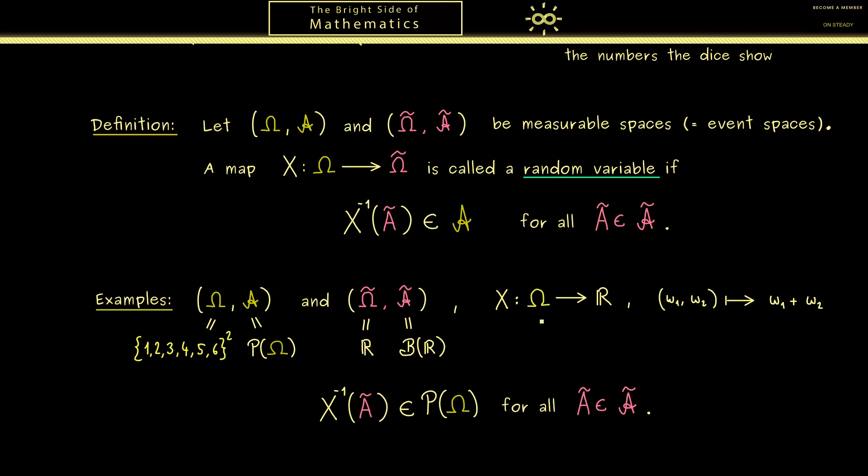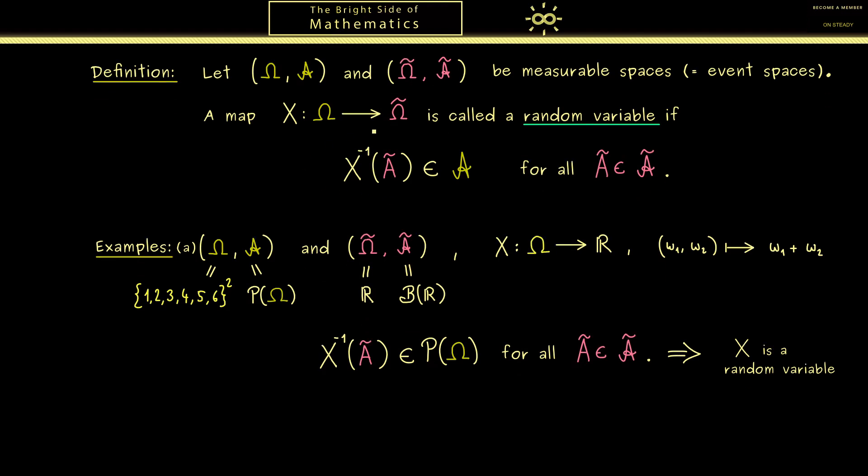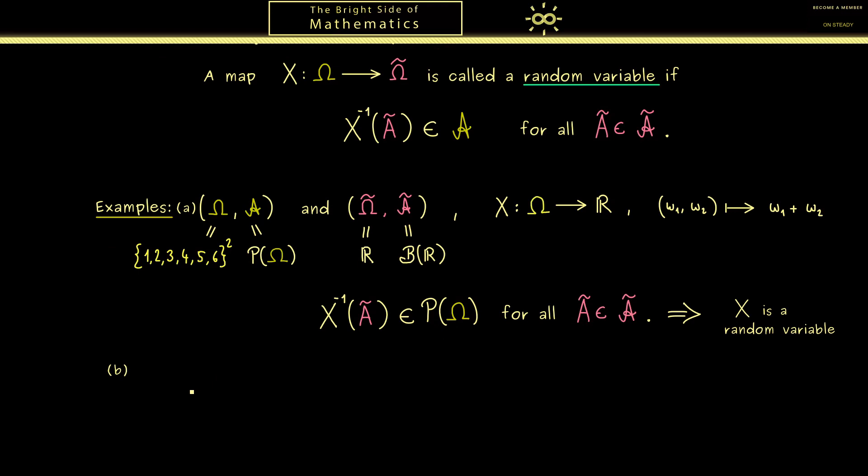This means that the definition of X does not matter at all when we have on the left-hand side the whole power set as the sigma algebra. So in this case we can easily conclude that the map X is a random variable. Indeed, most of the time we won't have any problems at all fulfilling this condition here. Or to put it in other words, counter-examples are always very artificial.